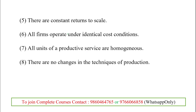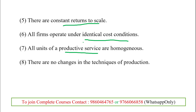Constant returns to scale means a 10% increase in input will produce a 10% increase in output — there are no changes between the returns and the inputs. Whatever is put into the production process yields the same level of output. All firms operate under identical cost conditions, as in a perfectly competitive market.